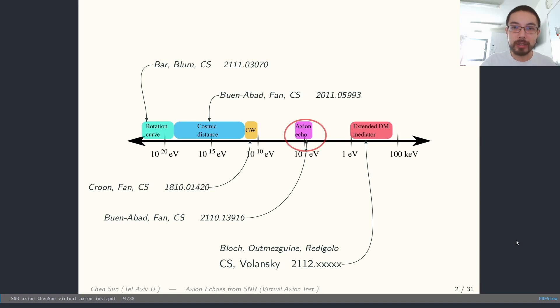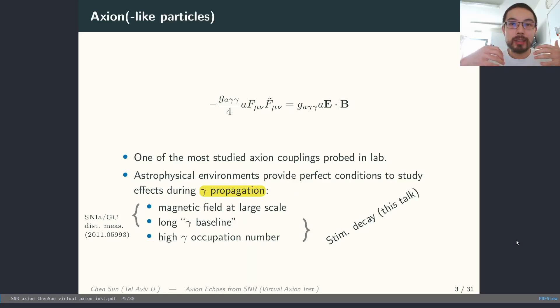Today we are going to discuss the idea of how to probe axions in the radio band. In particular, we make use of the phenomenon named stimulated decay and try to probe their decay product. So axion-photon couplings, one of the well-studied axion couplings with the standard model. In astrophysical environments, they provide a very interesting lab that has a lot of unique features, such as there is a magnetic field at large scale, and there is a very long baseline for photons to propagate through.